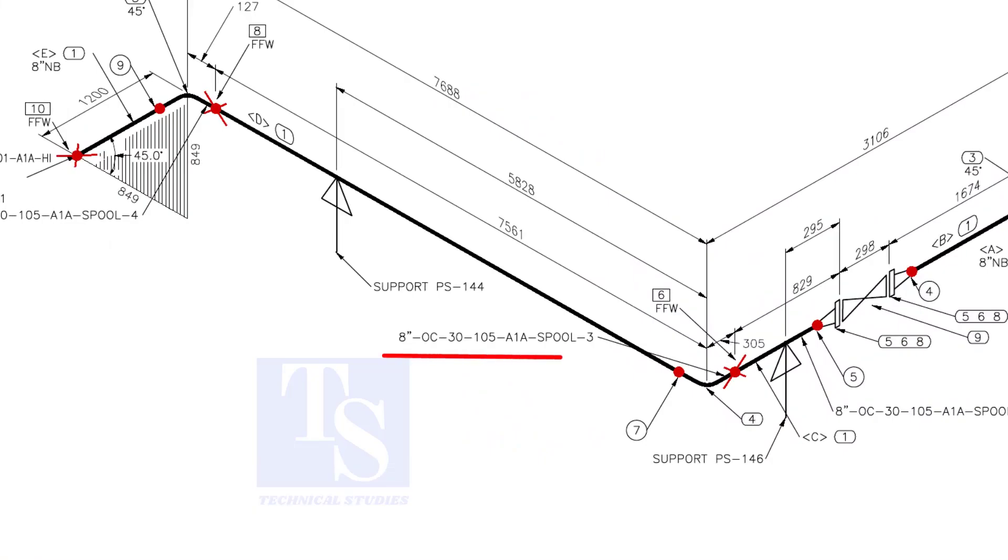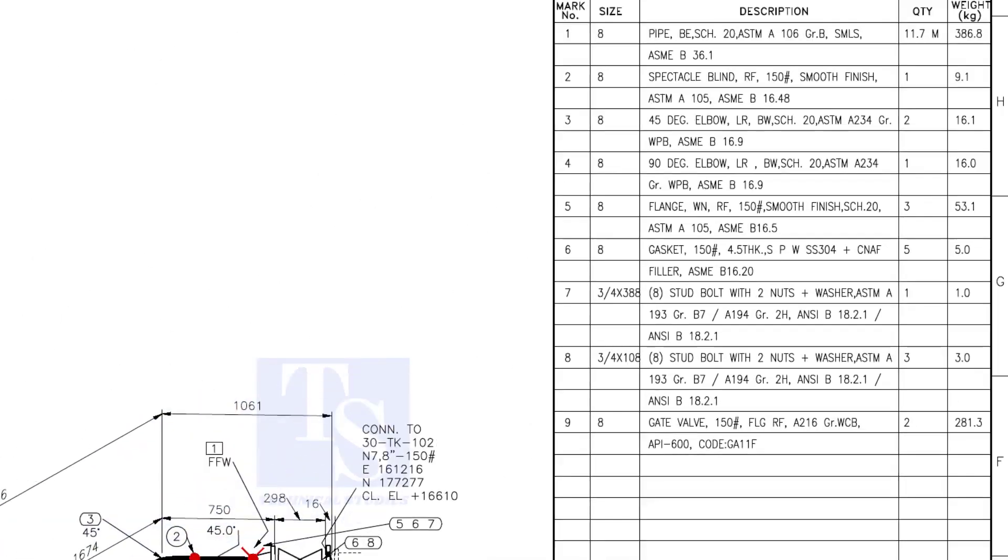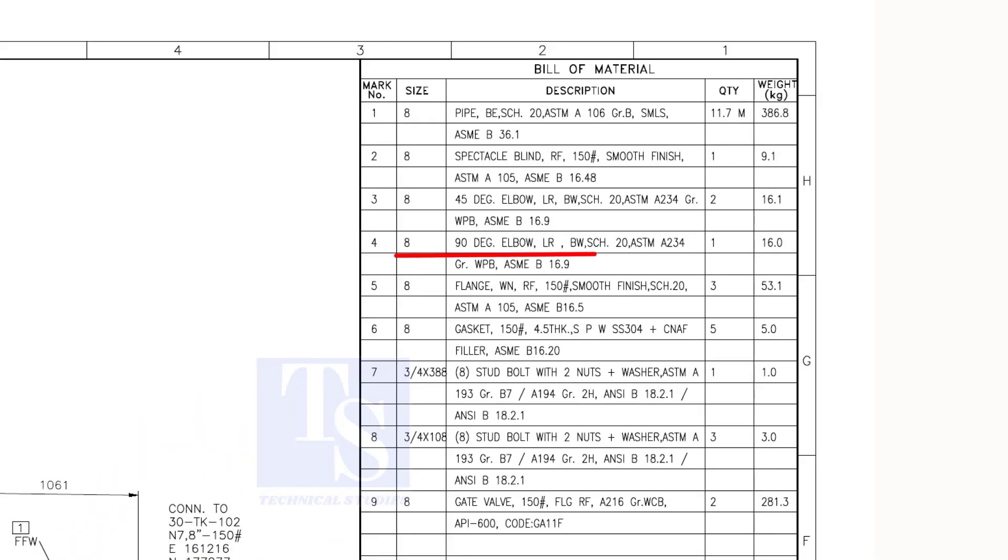Check the details of spool number three. We know item number one is pipe. Check what is item number four in the material list. As per the list, item number four is a 90 degree long radius elbow. Let us fabricate this spool.